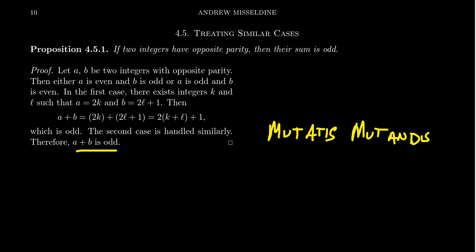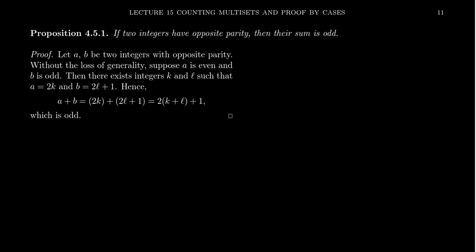This way of writing a similar-case argument is the retroactive approach: you acknowledge there are two cases, deal with Case 1, and then afterward note that Case 2 follows similarly. It turns out, though, that many authors prefer a more proactive way of dealing with similar cases — the author signals upfront that the cases are similar. In that case, people typically use the phrase 'without loss of generality.'